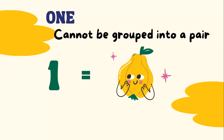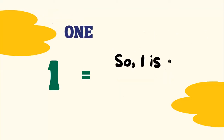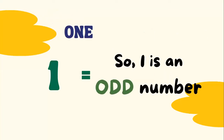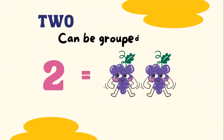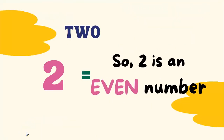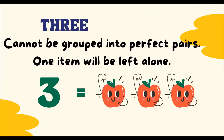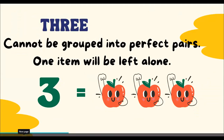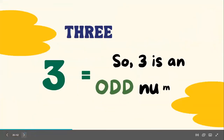One cannot be grouped into a pair, so one is an odd number. Two can be grouped into a pair, so two is an even number.